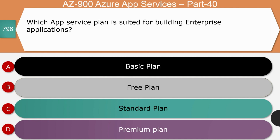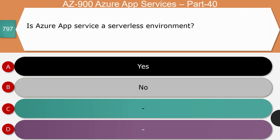Next question — which App Service plan is suited for building enterprise applications: basic, free, standard, or premium? The right answer is the premium plan. The free plan is for proof of concept, whereas the premium plan helps customers host enterprise applications. Premium plan supports larger physical and RAM memory. Enterprise applications are designed to handle large volumes of users, high usage, and low latency, so the premium plan is recommended.